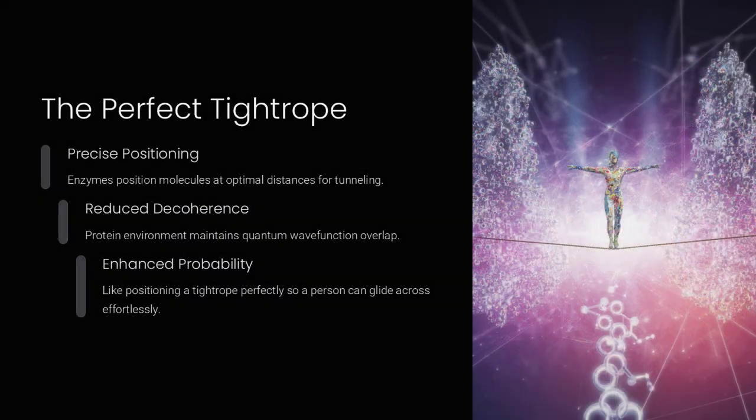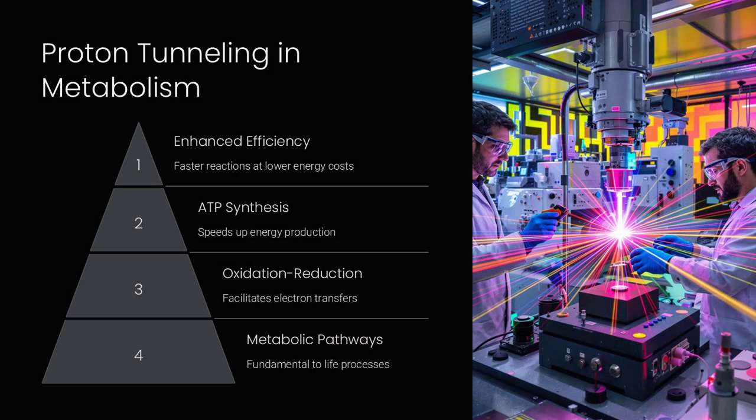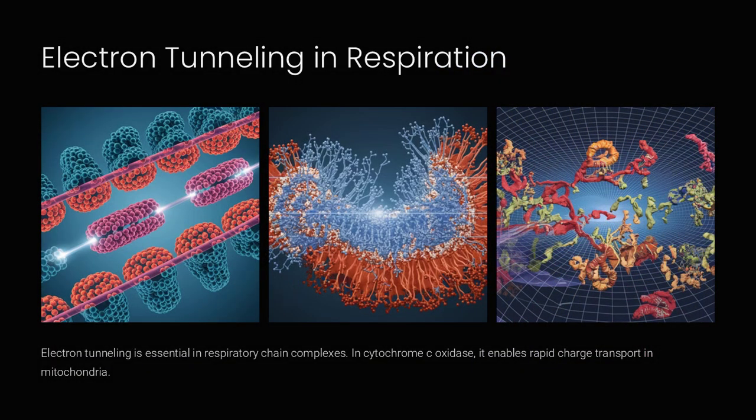How have scientists detected tunneling in enzymes? Researchers use kinetic isotope effects and temperature-dependent reaction rate measurements to infer tunneling behavior.